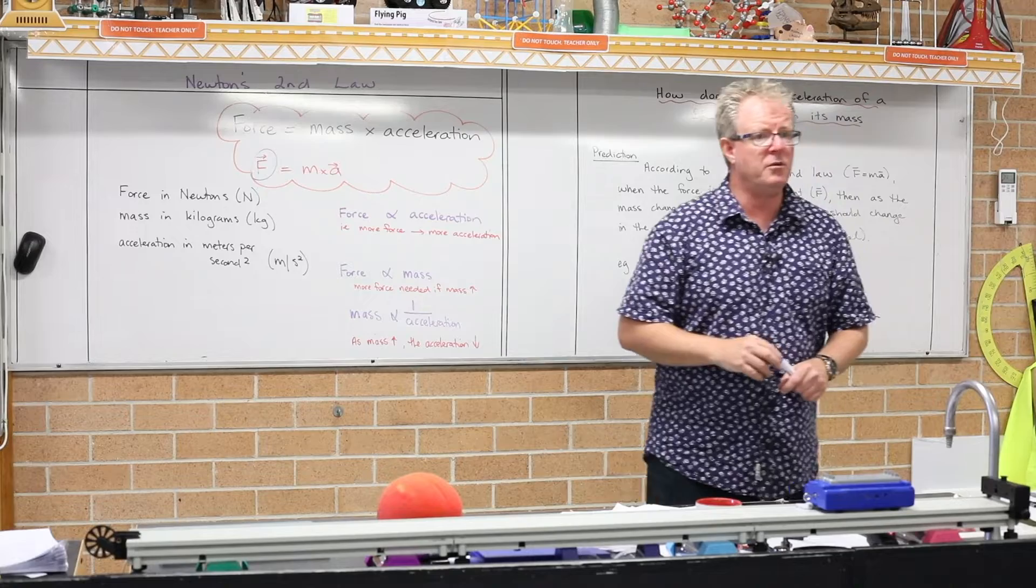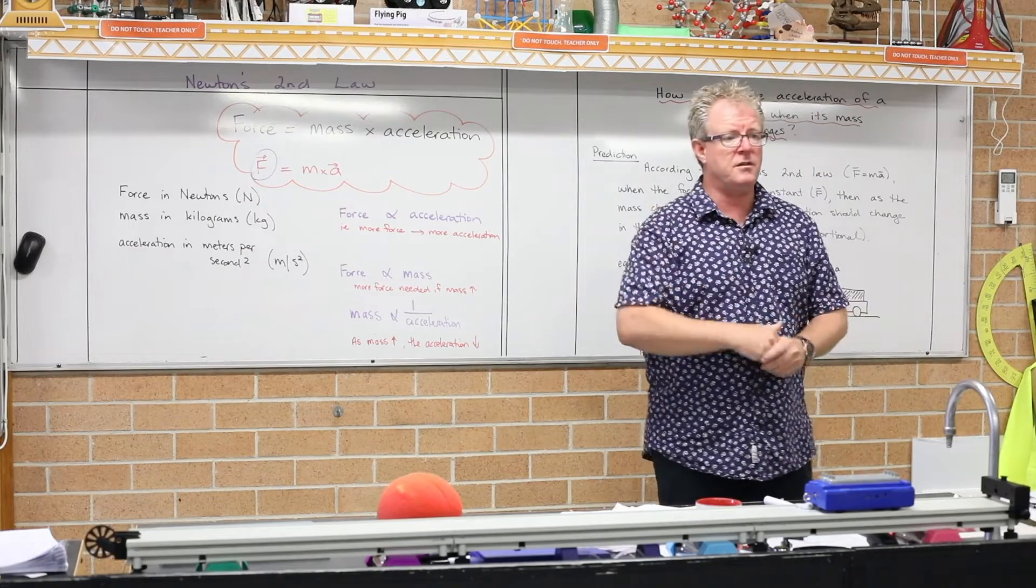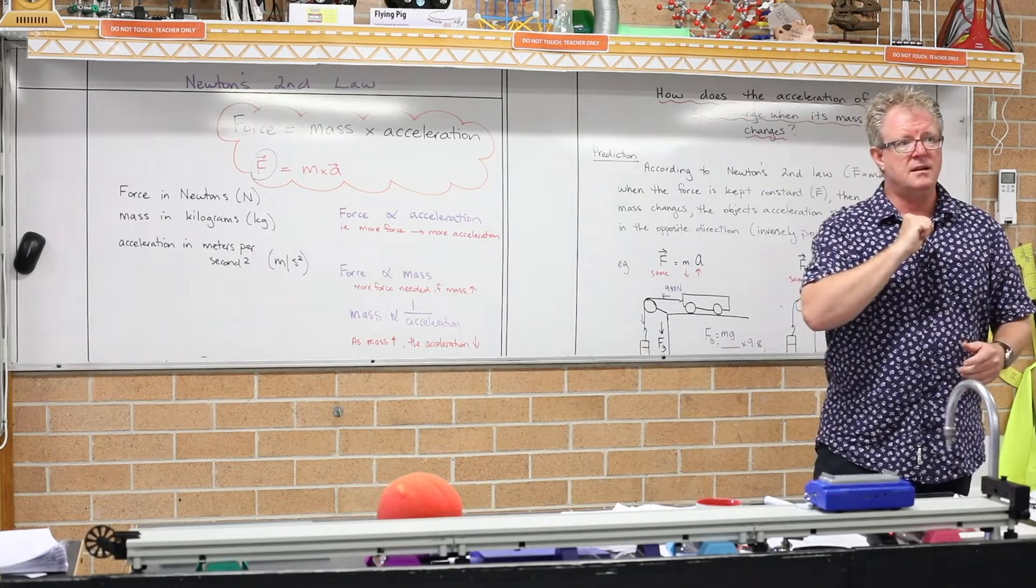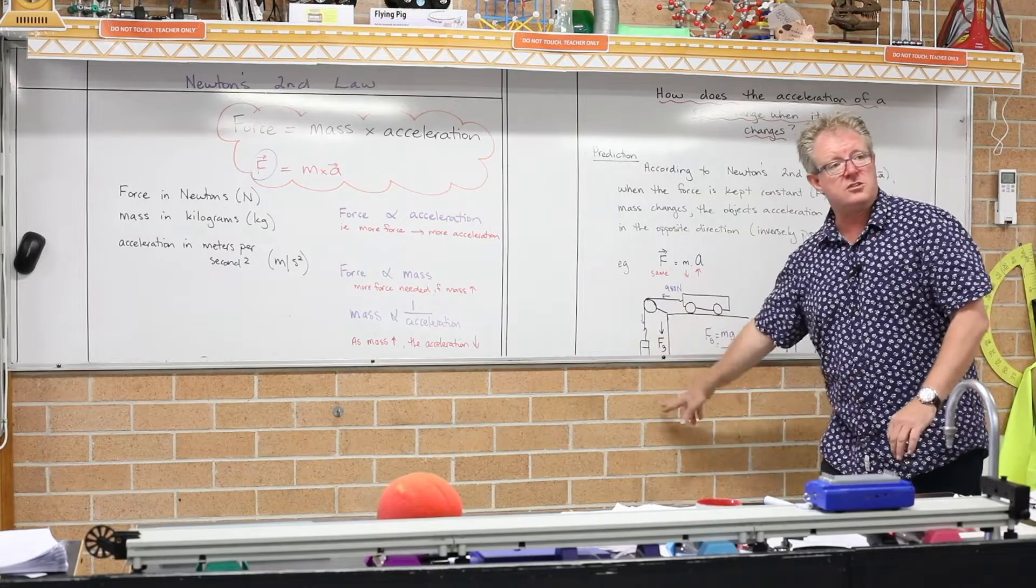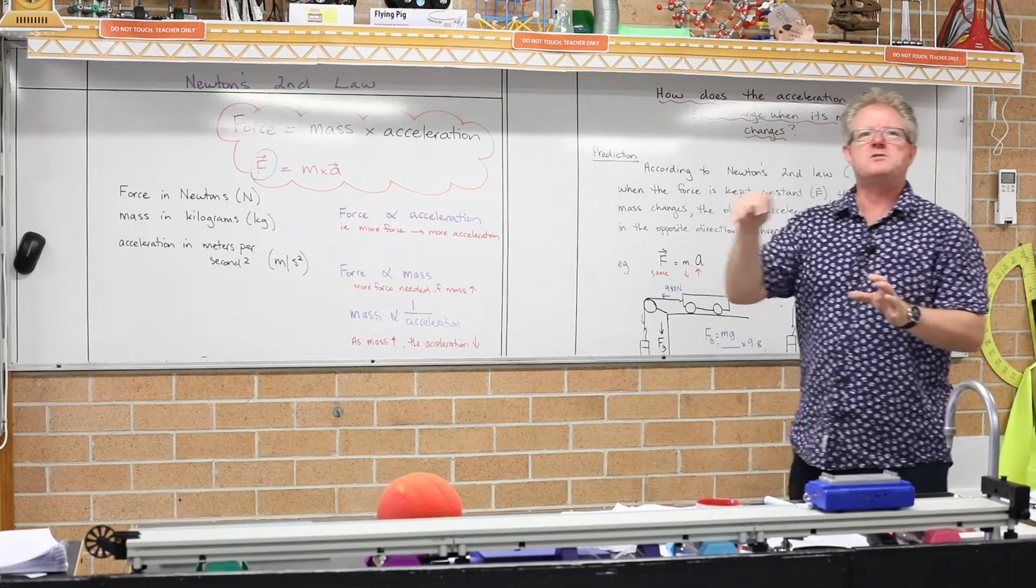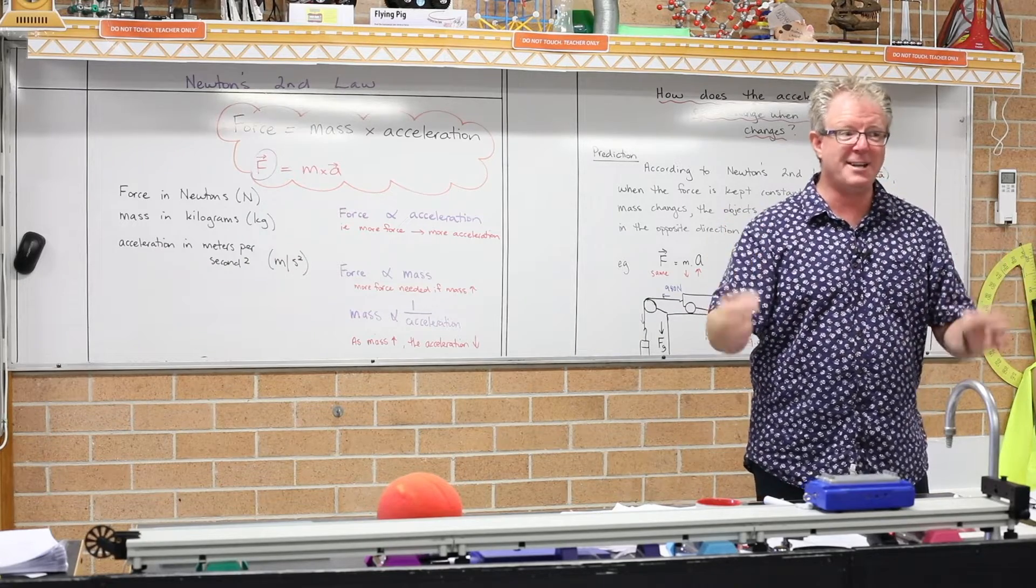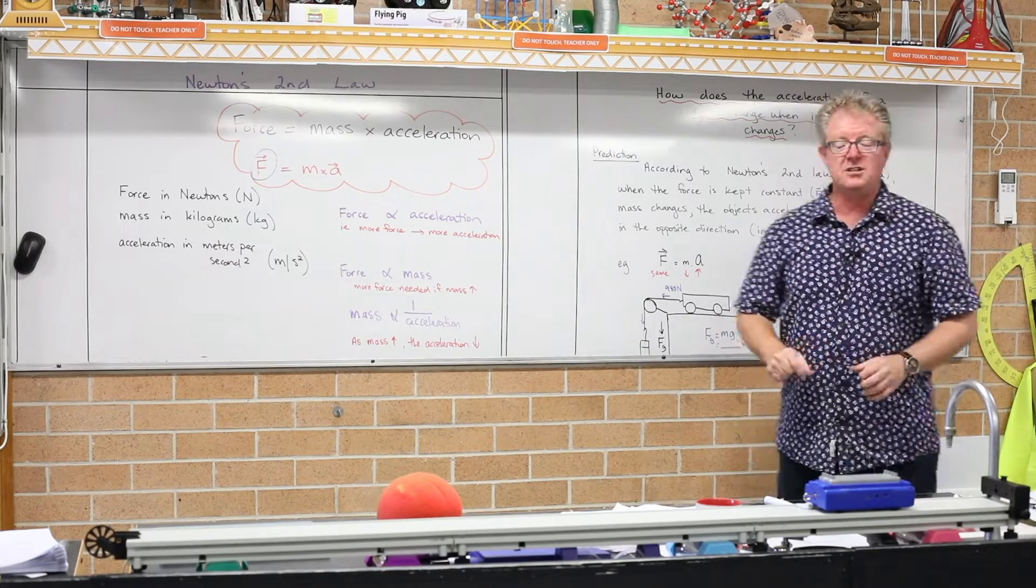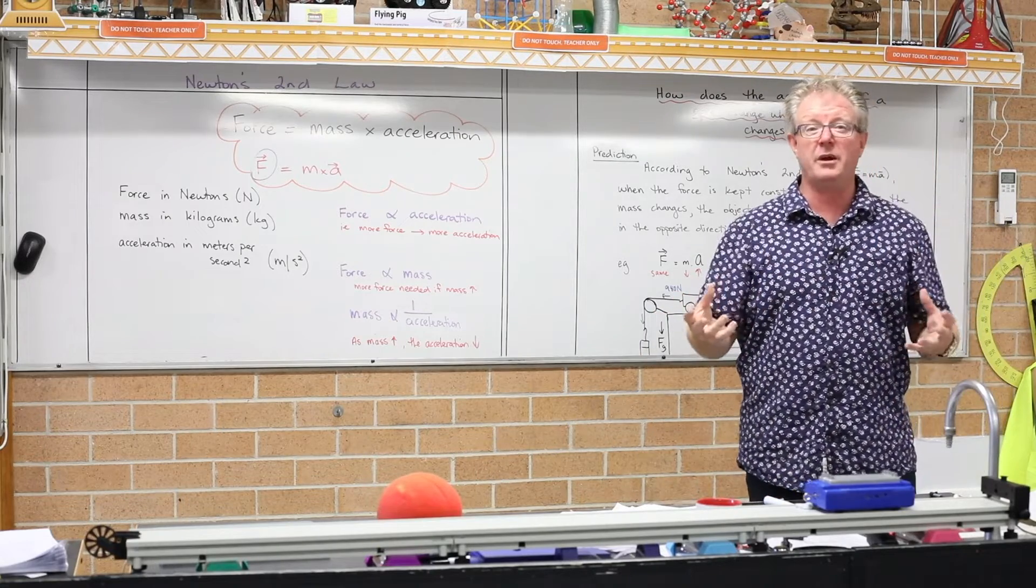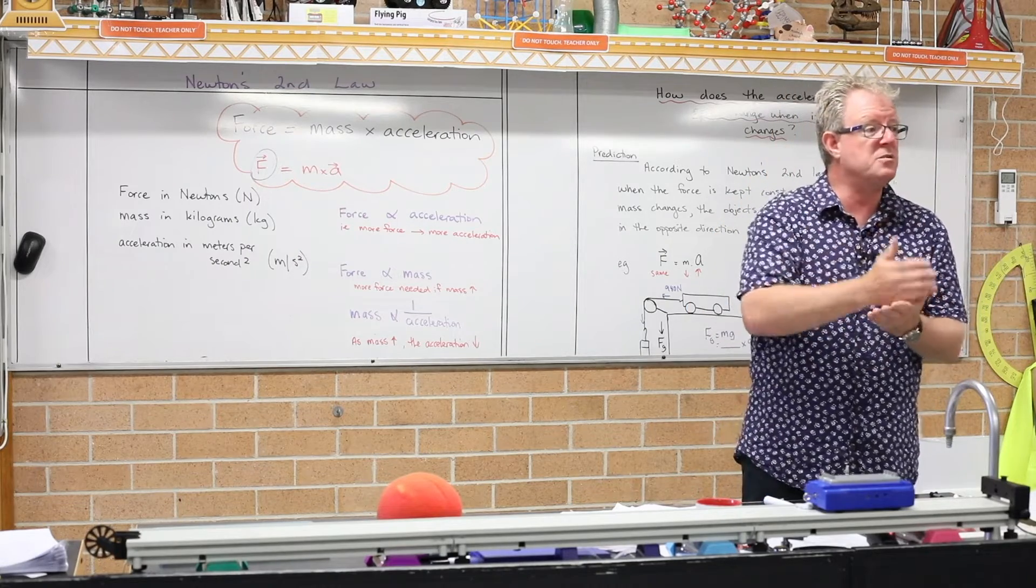So what would be the independent variable then? What's the independent variable in this experiment? The one that we are changing, yeah, the mass is the independent variable. And the variable that we are measuring, the dependent variable, what's that? What are we measuring here? Well, that's constant, the force is constant. We're measuring the little dots and taking them off. Speed. We're measuring the acceleration. The acceleration, because the acceleration is the change in speed. So you will measure the speed, what it begins with and what it finishes with. And of course, the difference between those two will be its acceleration. So we're measuring the acceleration, it's the dependent variable. We're changing the mass, which is the independent variable.